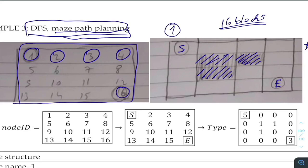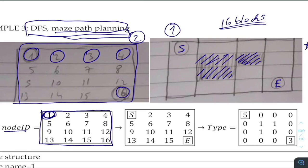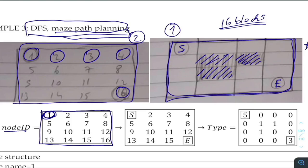The first step is the ID matrix and the second is the type matrix. The program is quite general — it doesn't need to be a square 4x4; it can be 8x10 for example. S can be in one location and E in another. You just write a sketch of your problem and generate the ID matrix.